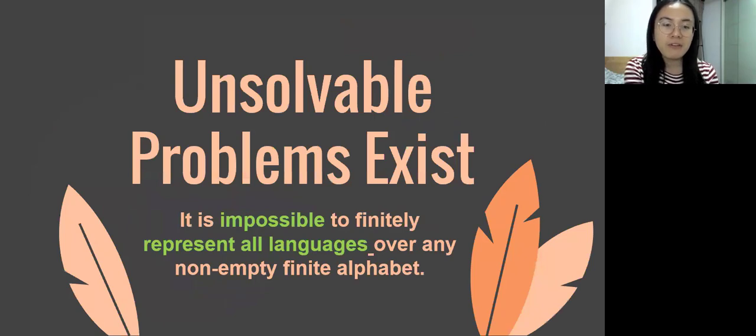Due to the limited memory of machines, representation of languages by finite specifications is a central issue in the theory of computation, typically when infinite languages are considered. We have an important result claiming that it is impossible to finitely represent all languages over any non-empty finite alphabet. There are always languages that cannot be computed by a computational model. The claim comes from the countability arguments, especially the diagonalization principle.